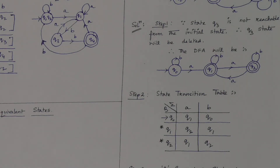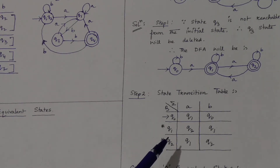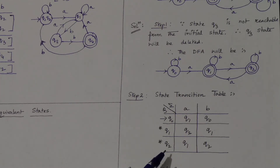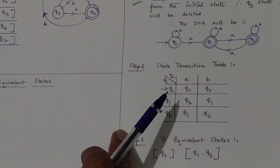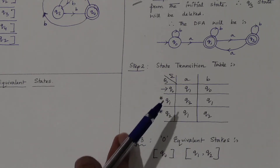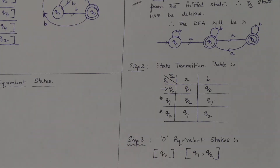Moving to step three, we find the zero equivalent states. To find zero equivalent states, you separate the final states from the non-final states. In this example, there are two final states: q1 and q2 form one group, and q0 is a separate group as the non-final state. So the zero equivalent states are: {q0} and {q1, q2}.